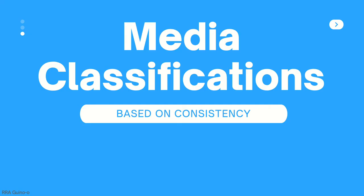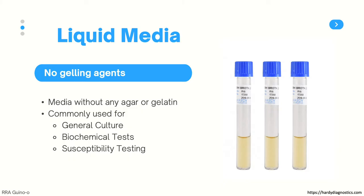Media can be classified based on their consistency, and for this classification there are three types. The first type is liquid media. These are media that contain no gelling agents, such as agar or gelatin. The most common use of this kind of media is general culture. However, there are also some biochemical tests and susceptibility tests that employ liquid media.